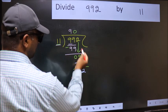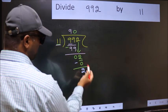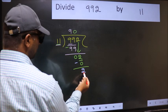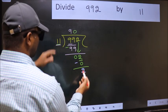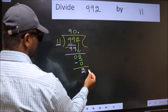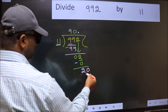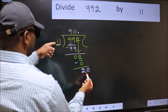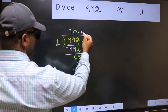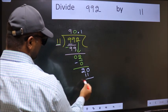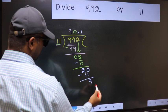Over here, we did not bring any number down, and 2 is smaller than 11. So now you can put a dot and take 0, making it 20. A number close to 20 in the 11 table is 11 once, which is 11. Now subtract, and we get 9.